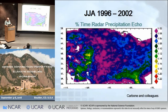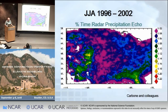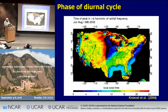Mitch Moncrief has done a great job describing these systems theoretically. This is work by Rick Carbone's group looking at NEXRAD radar data — it shows convection starting over the Rockies and moving to the east. The summary is this diagram that Jason Knievel put together in 2004, showing this midnight maximum originating over the Rocky Mountains region.